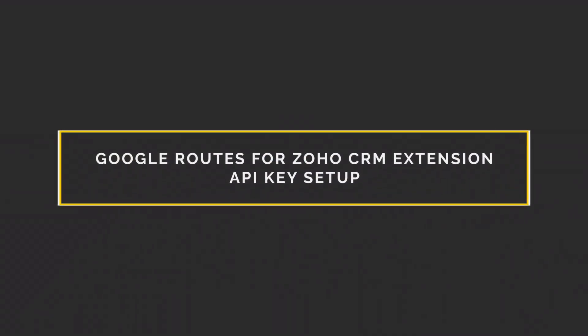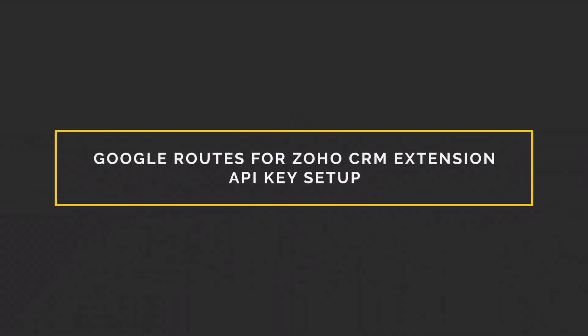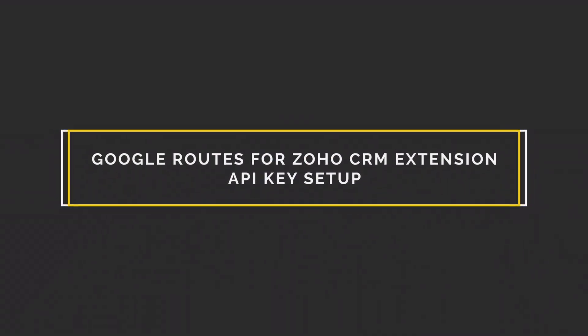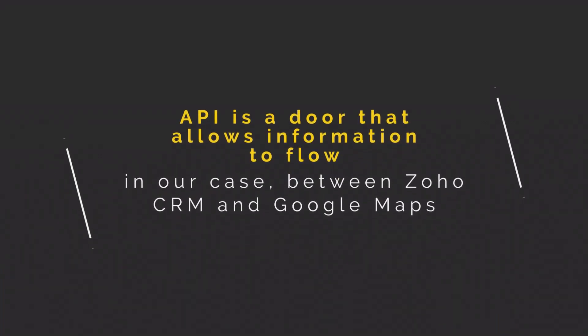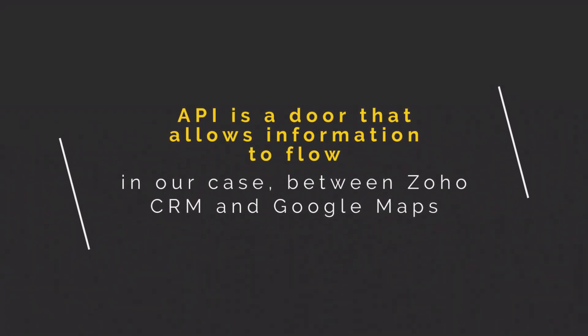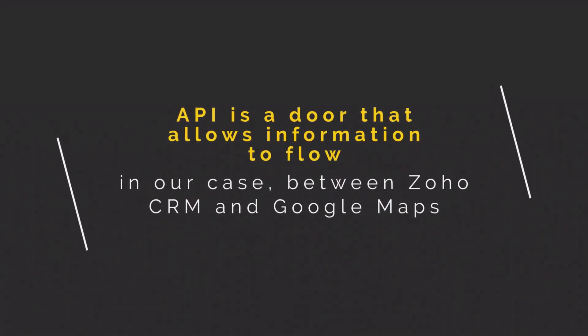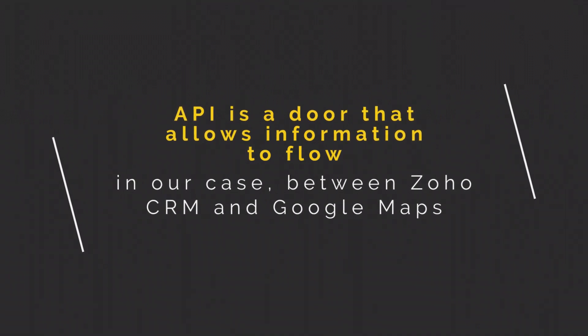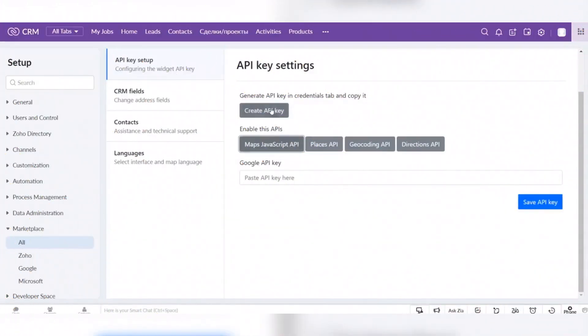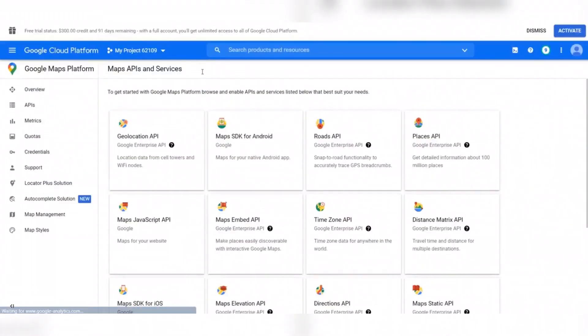Google Roots for Zoho CRM Extension API Key Setup. An API is a door that allows information to flow freely in and out — in our case, between Zoho CRM and Google Maps. We go into the Google Console to set up this data exchange, so we create and configure an API key for the things we need from Google to access their information in CRM.